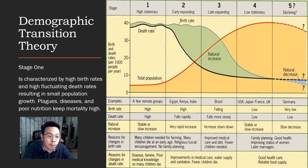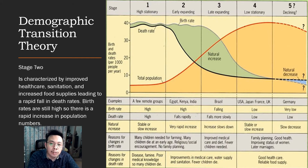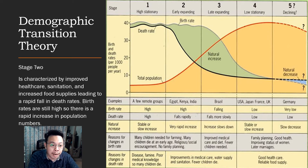Stage 1 is characterized by high birth rates and high fluctuating death rates, resulting in small population growth. Plagues, diseases, and poor nutrition keep mortality high. Stage 2 shows a fluctuating birth rate and a slightly falling death rate, with total population rising. It is characterized by improved healthcare, sanitation, and increased food supplies leading to a rapid fall in death rates, while birth rates remain high, causing rapid population increase.